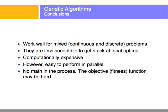They're less susceptible to getting stuck at a local optimum because they're always restarting and there's mutation, which introduces some randomness. They are computationally expensive though — they might take a long time to converge. But on the other hand, they can be performed in parallel, and there's no math in the process. The fitness function, however, might be hard to define — you might need a very specific one.